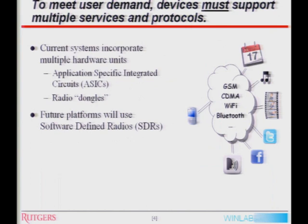To meet user demand, devices really have to support multiple services and protocols. The most popular include CDMA and GSM, depending upon whether you have Verizon or AT&T as a carrier. Many devices also support Bluetooth and Wi-Fi to provide links back to features like streaming Pandora and internet access. Currently, these devices most often use application-specific integrated circuits, or ASICs, to provide the protocol functionality to interface with all of the desired applications.